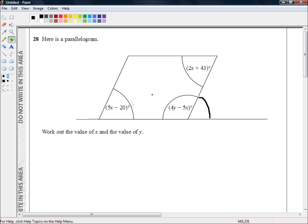Okay, so if we know that these two angles are the same, then we know that 5x minus 20 is equal to 2x plus 43.